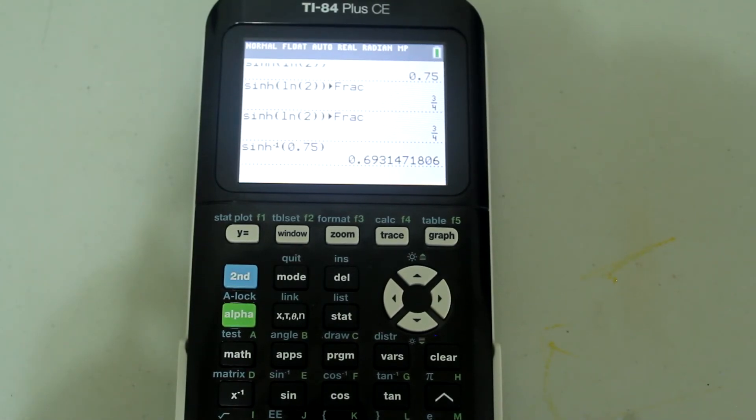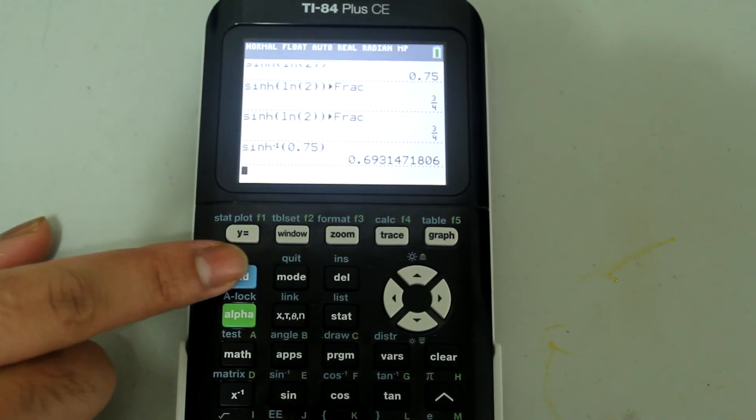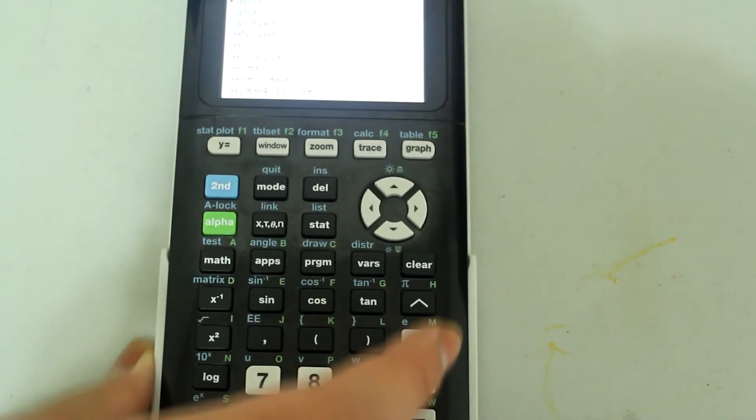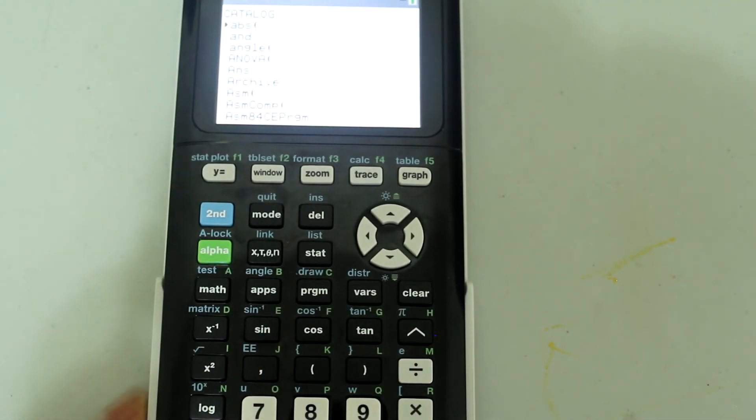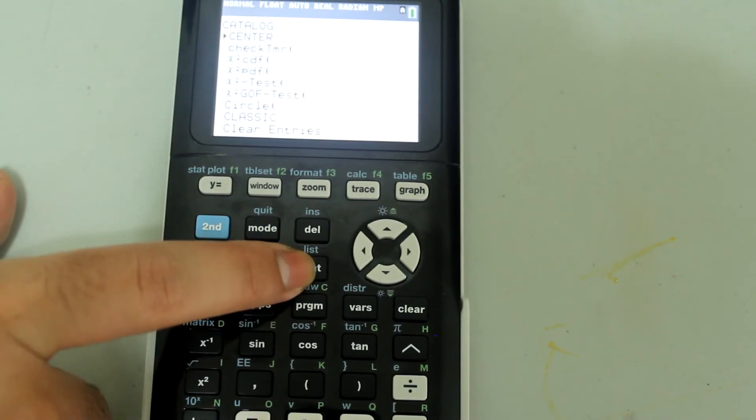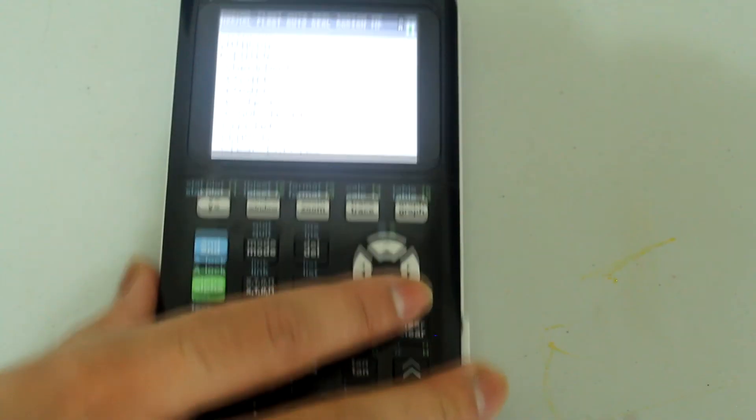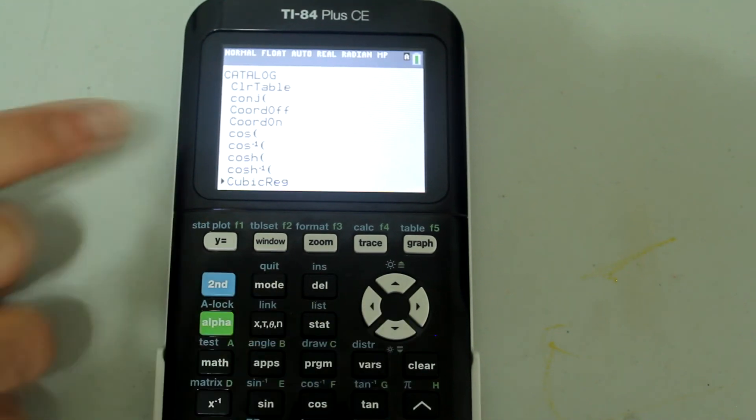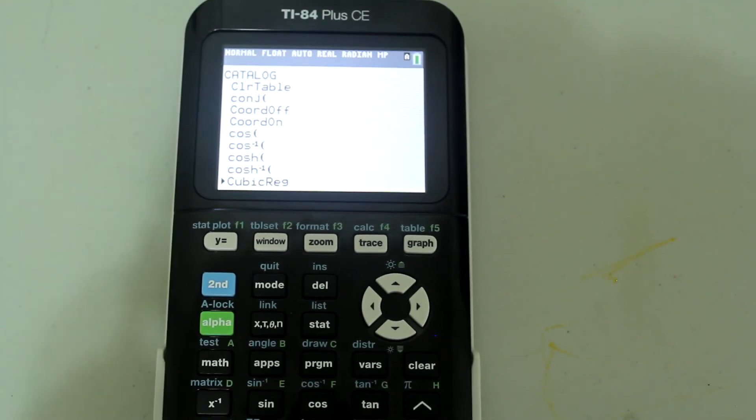If you wanted to do cosh and inverse cosh, it would be done in a similar fashion. Go to the catalog, 2nd and then 0. Instead of natural log, you would press the program button for C, which takes you to options starting with C. Arrow down until you see cosh and inverse cosh, and you would do it the same way as we did sinh and inverse sinh.